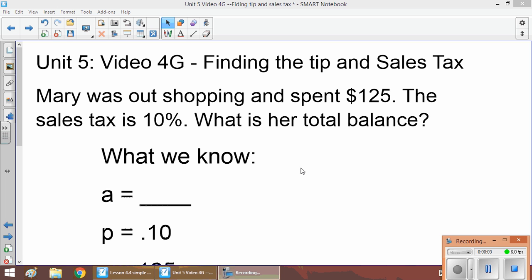Hey guys, welcome to the seventh and final video in Unit 5 Video 4 series. This is Video G: Finding Tip and Sales Tax. Tip is something you give when you go out to dinner and you want to give your waiter or waitress a tip. That's money that goes directly to the waiter or waitress. Sales tax, unfortunately, is something you have to pay on almost every single thing that you buy.